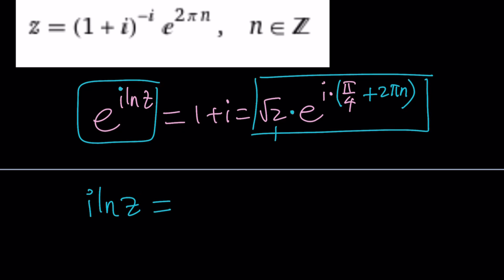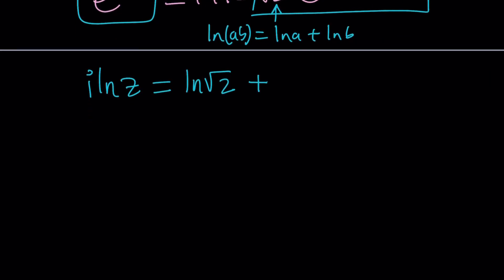This is going to be a real valued ln which is ln square root of 2 plus, now notice that if you log a product it turns into the sum of 2 logs. In other words ln ab is ln a plus ln b. Obviously you can also use the following formula or identity.